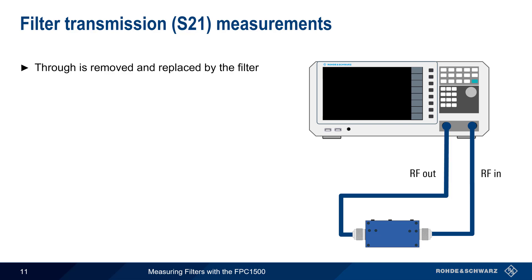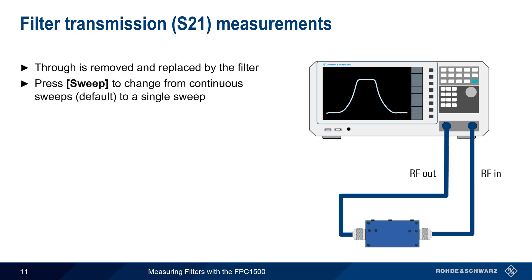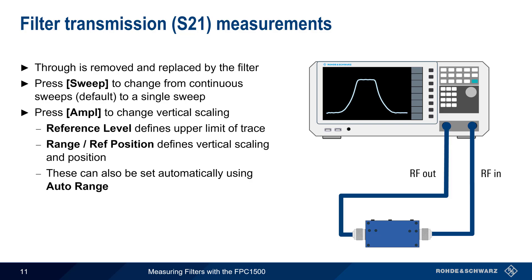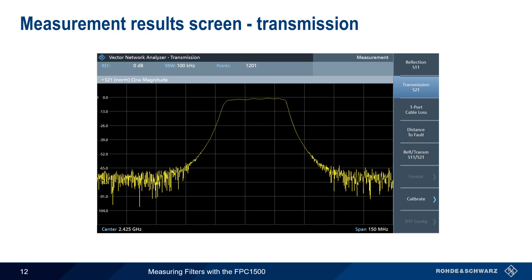By default, the FPC will sweep and update measurement results continuously, but this can be changed to a single sweep by pressing the Sweep hard key. The vertical scaling can be adjusted using the Amplitude hard key. The reference level is used to define the upper limit of a trace, and Range Reference Position is used to scale the trace vertically and to move the trace up or down. Note that the FPC also has an Auto Range key that can adjust these values automatically. Here is an example of a bandpass filter measurement.